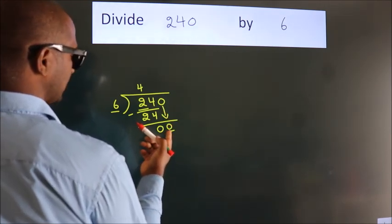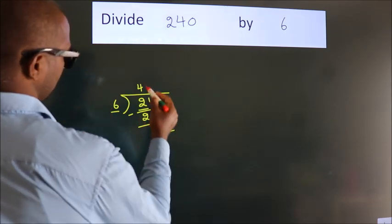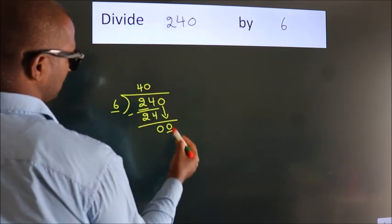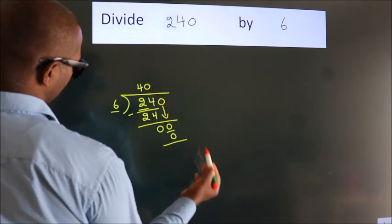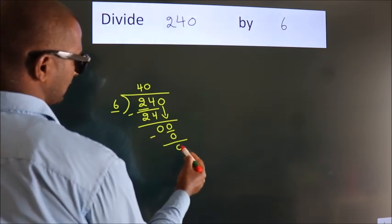When do we get 0? In 6 table, 6 times 0, 0. Now we subtract. We get 0.